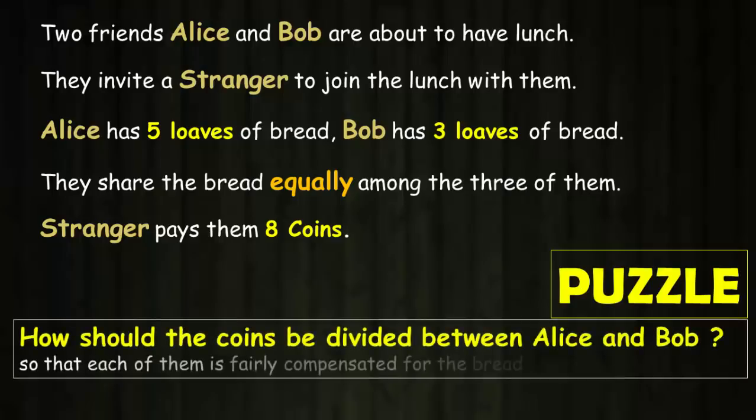How should the coins be divided between Alice and Bob so that each of them is fairly compensated for the bread they shared? Pause the video, think logically and think mathematically.